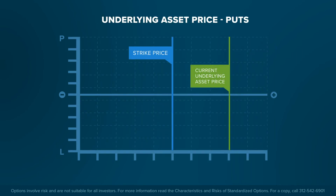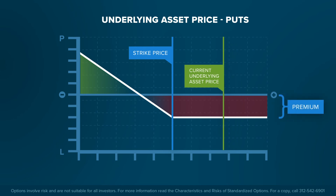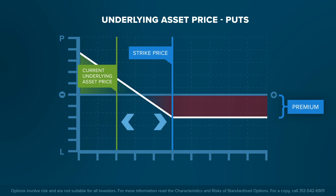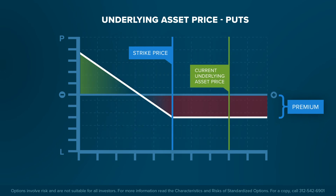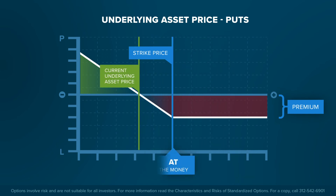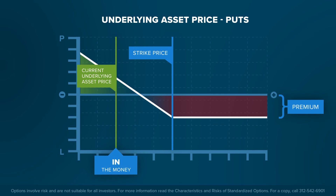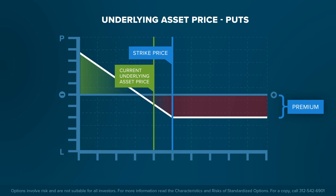For a put option, the lower the underlying asset price in relation to the strike price, the higher the option premium. The payout at exercise of the option is the difference between underlying asset price and the strike price. Options with an underlying asset price above the strike price are out of the money, at the strike at the money, and below the strike in the money. Even though the option may be in the money, it may still result in a loss when considering both the premium and commission paid for the option. They should be considered when determining the break-even point for the option contract.